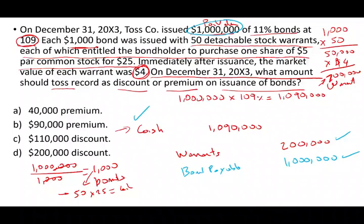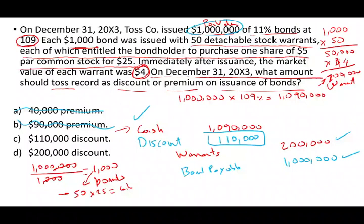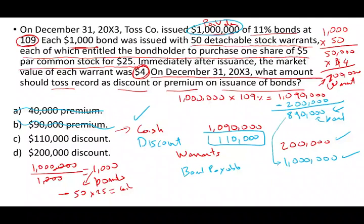What's left is either a premium or a discount. We're missing a debit, and a missing debit means we have a discount — so you can eliminate answers A and B. What's missing is $110,000. It's a discount. Although we received $1,090,000, part of that $1,090,000 is $200,000 of warrants. So for the bond itself, we received $890,000. Although we have a face value of a million that we have to pay back, the bond was issued at a discount of $110,000. Therefore, the answer is C.